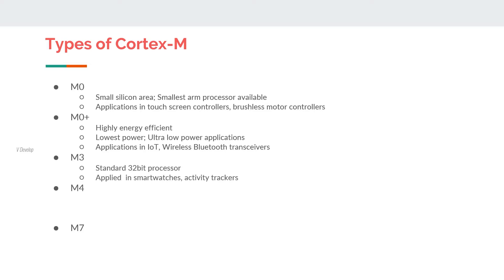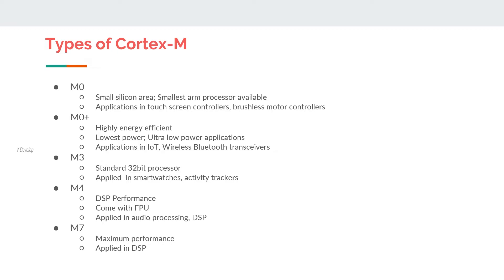The M3 is a standard 32-bit embedded processor and can be found in smartwatches and activity trackers. The M4 processors are capable of DSP performance and come with floating point units — we will understand more about floating point units in coming videos. They are used for audio processing and other digital signal processing applications. The M7 processors are built with maximum performance and are used in high-performance applications like digital signal processing.